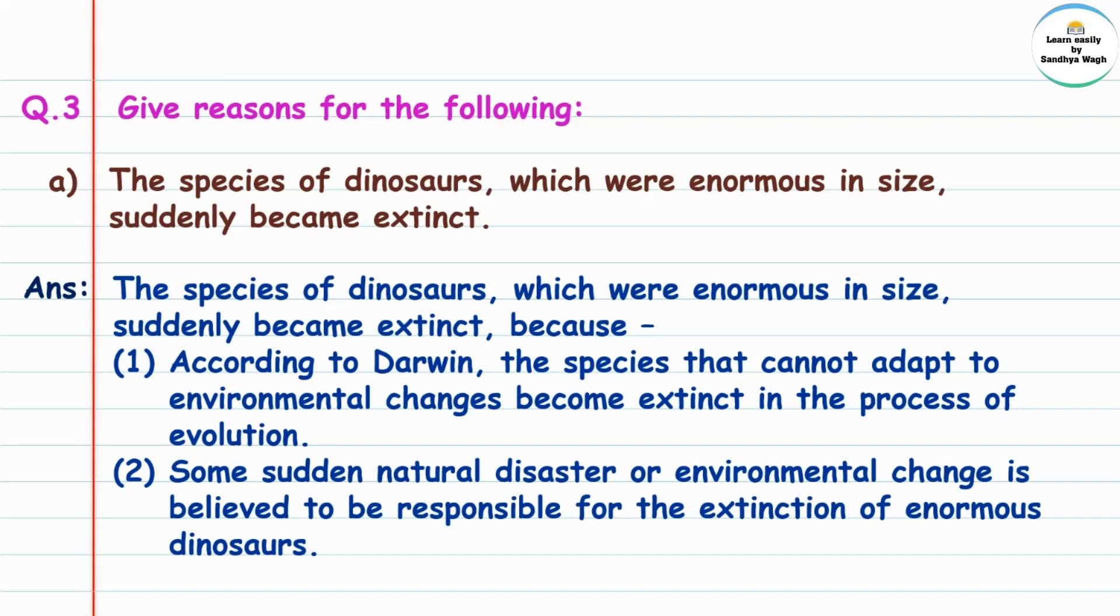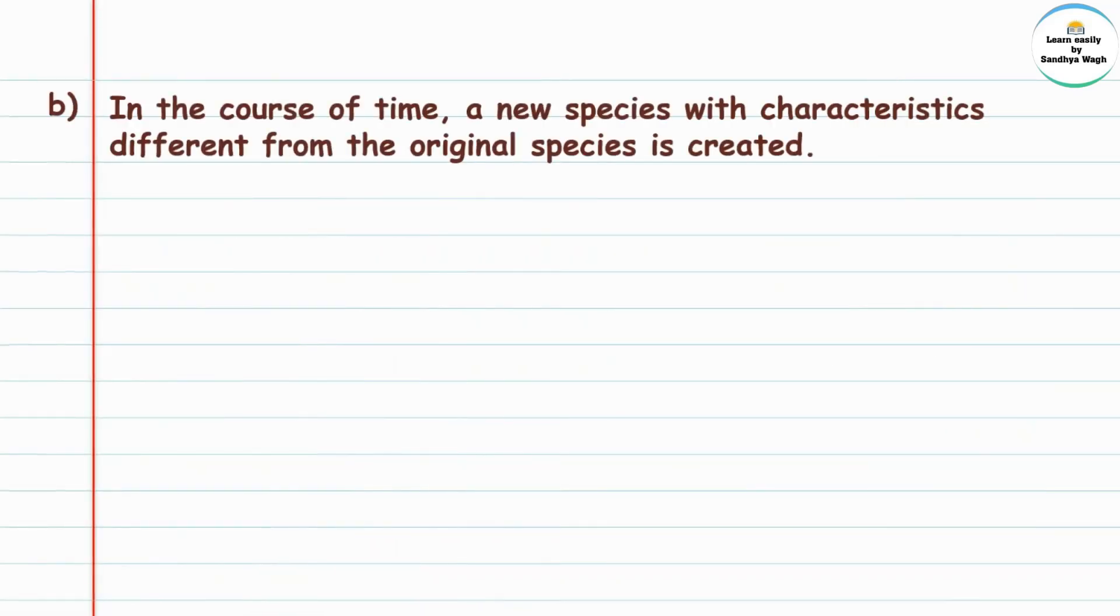Next question: In the course of time, a new species with characteristics different from the original species is created. Characteristics means features and species means a particular type of organism. The question asks what are the reasons for this.